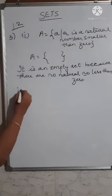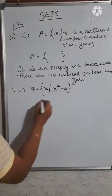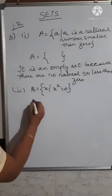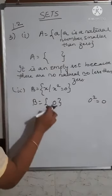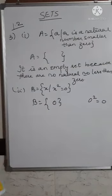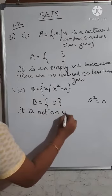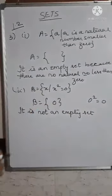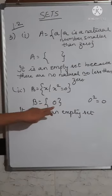The second part of question 3: B = {x such that x² = 0}. Which number when squared gives zero? When you square the number zero, you get zero. So the element here is 0, meaning B = {0}. Is this an empty set? It is not an empty set, because zero is an element of the set. The reason: zero is an element of B, so it is not an empty set.